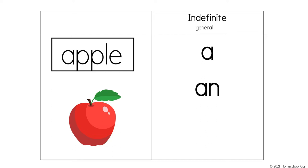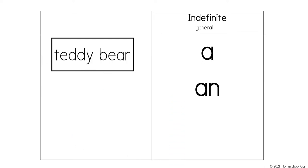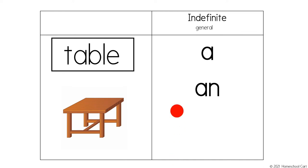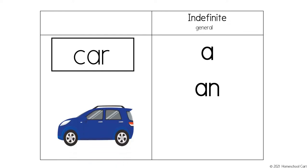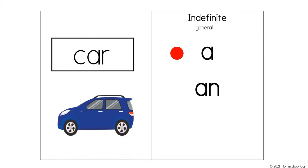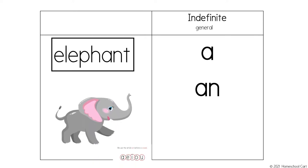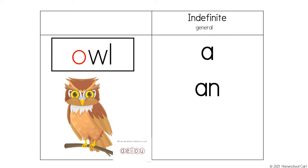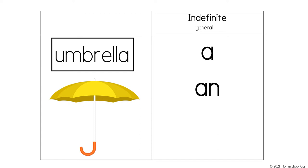Let's practice some more. Apple — it begins with a vowel, the letter a, so we would say an. What would you use for teddy bear? A. Good job. How about table? A. How about a car? A. How about elephant? Does it begin with a vowel? Yes, the letter e — we would use an. How about owl? Does it begin with a vowel? Yes, the letter o — we would use an. How about umbrella? Does it begin with a vowel? Yes, the letter u — we would use an.